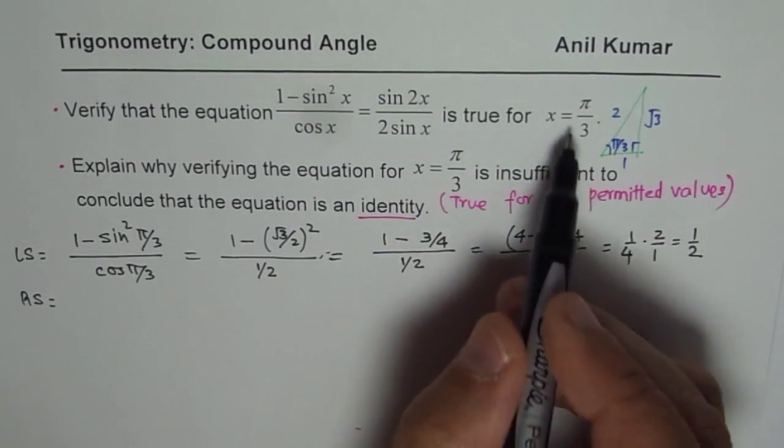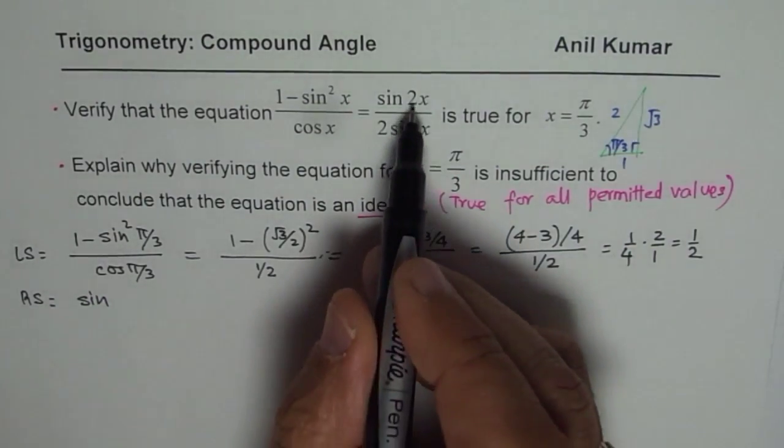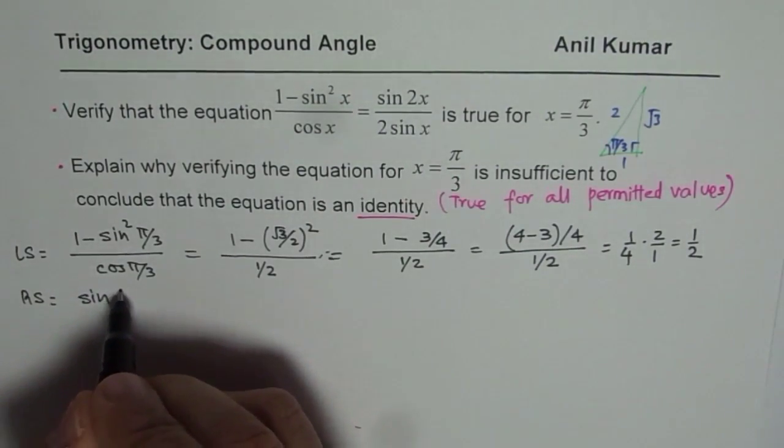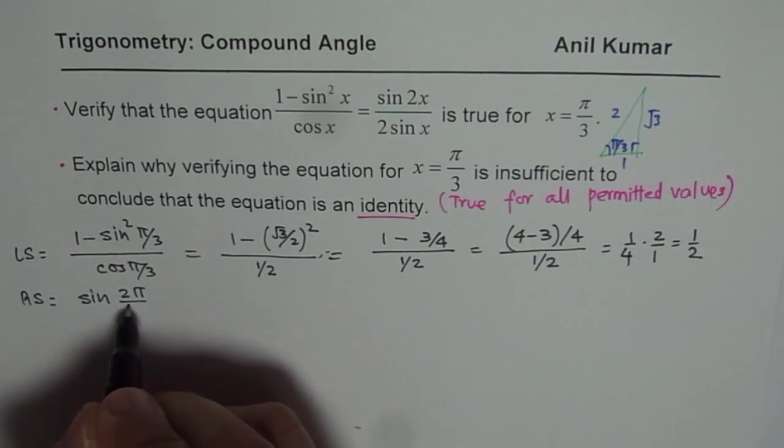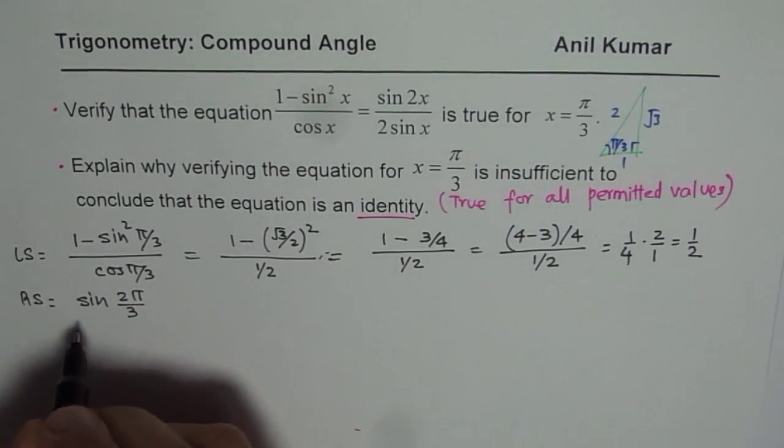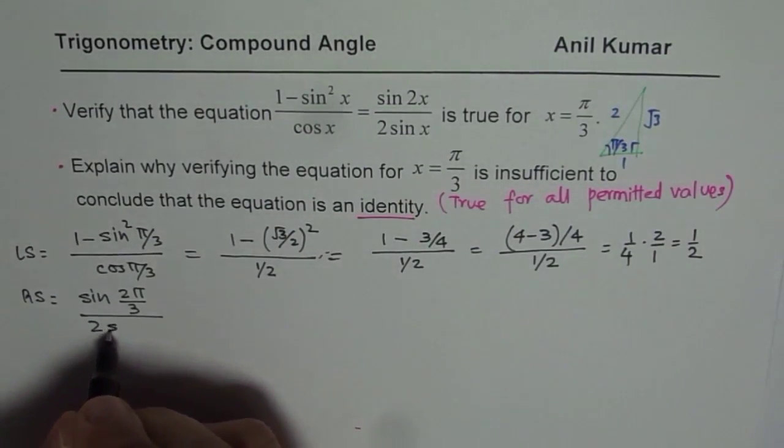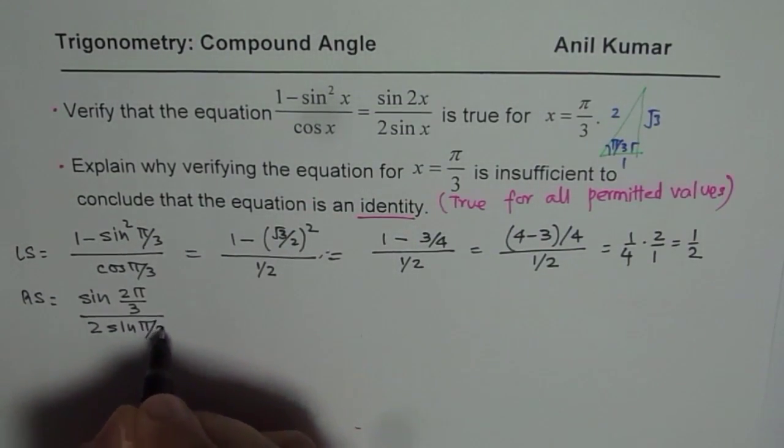For the right side, if I use π/3 here, I get sin(2π/3)/(2 sin(π/3)). Now, what is 2π/3?